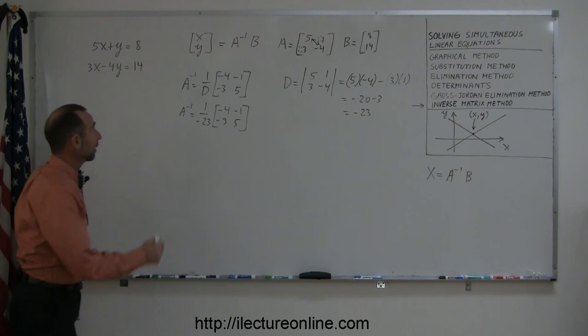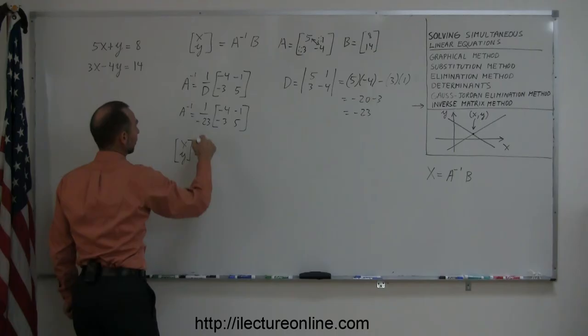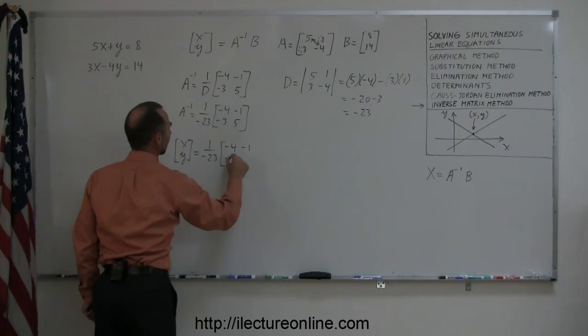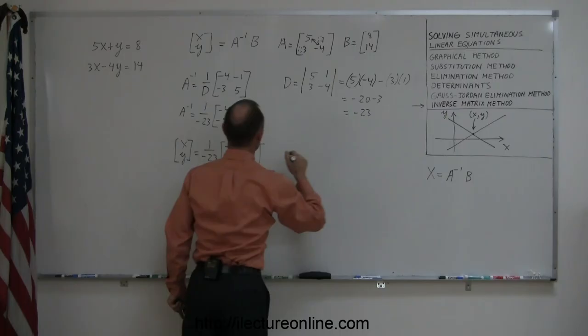So then to find x and y, it is equal to the inverse of A, which is 1 over negative 23, times negative 4, negative 1, negative 3, and 5, and multiplying that times the B matrix, which is defined over here as 8 and 14.